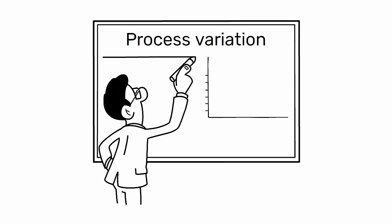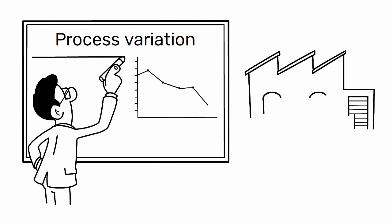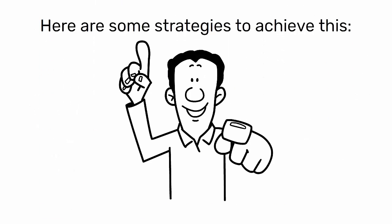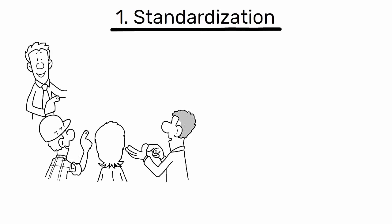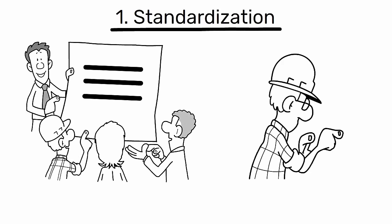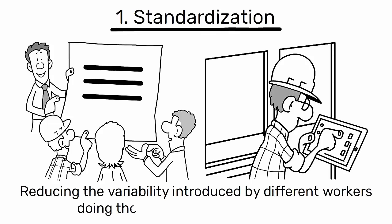Reducing process variation is a critical aspect of lean manufacturing and industrial engineering. Here are some strategies to achieve this. 1. Standardization: develop standardized work methods and procedures. This creates a consistent approach to tasks, reducing the variability introduced by different workers doing the same task in different ways.